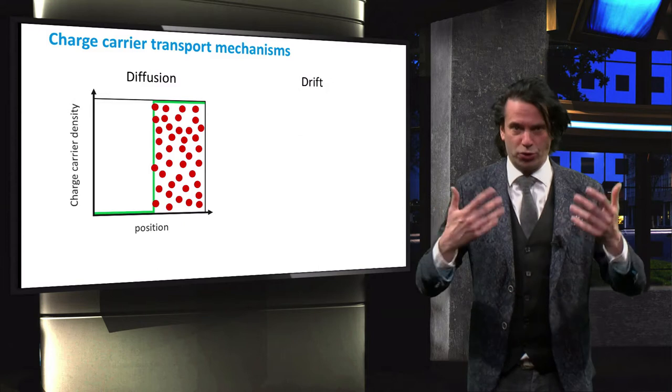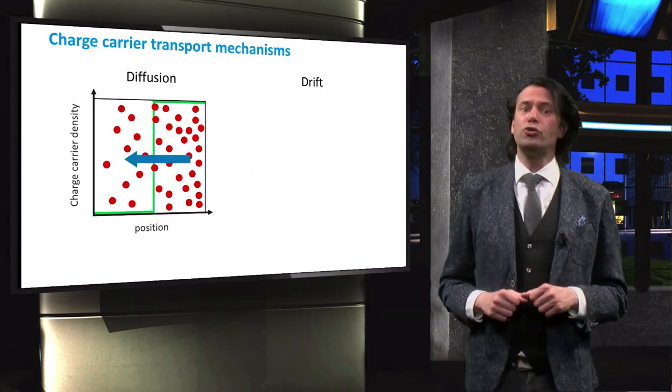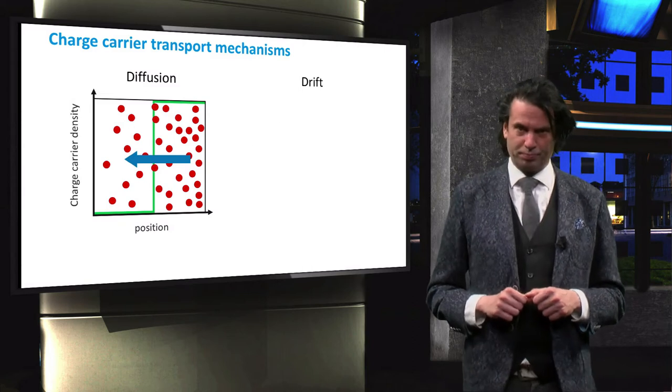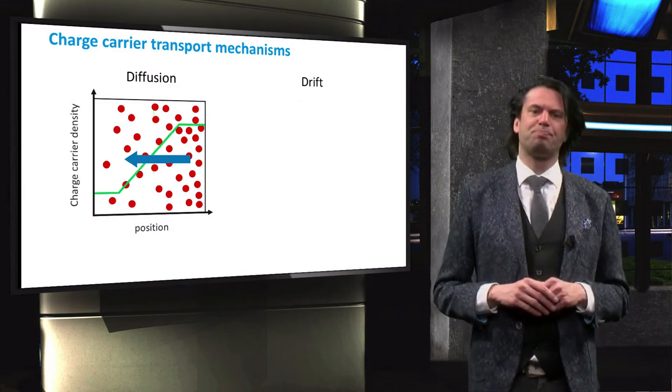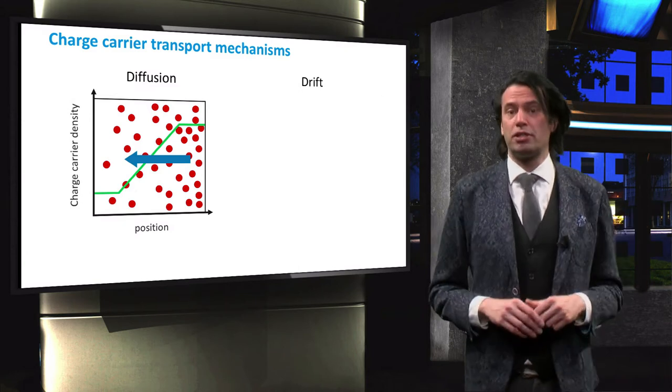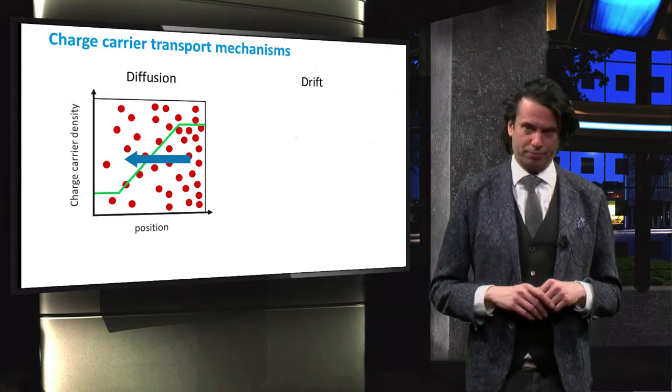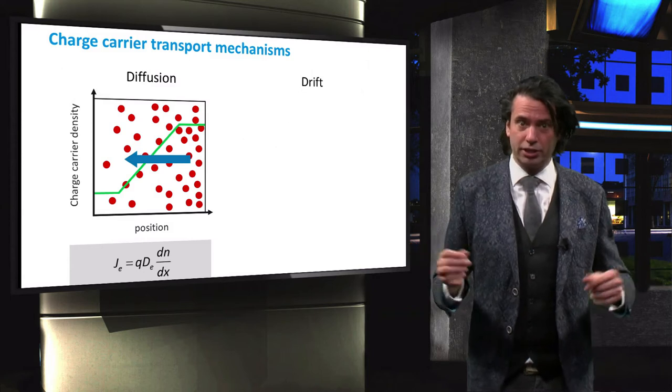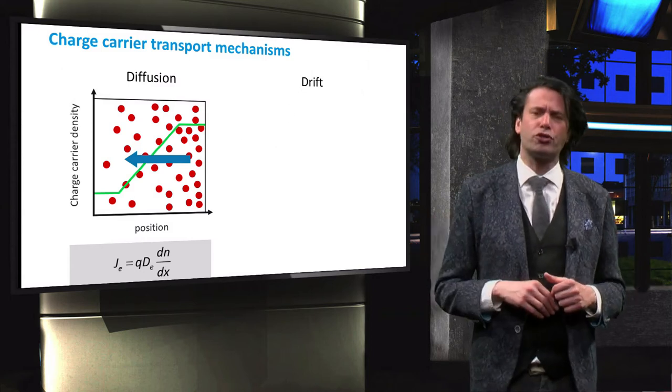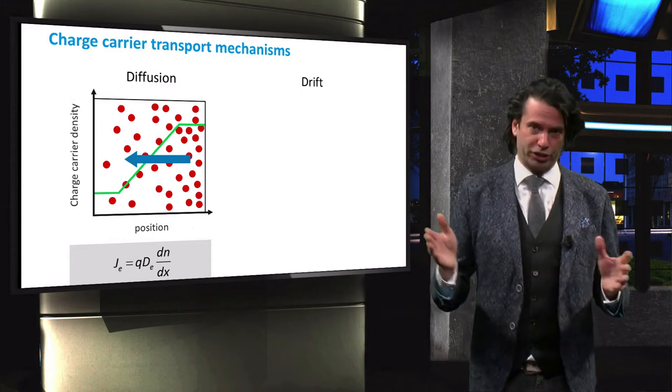As a result of random thermal motion, there will be a net movement of the charge carriers to the low concentration region, creating a more distributed concentration profile. The current generated by, in this case electron diffusion, is described by this equation. Here q is the elementary charge, d is the electron diffusion coefficient, and dn over dx is the concentration gradient.